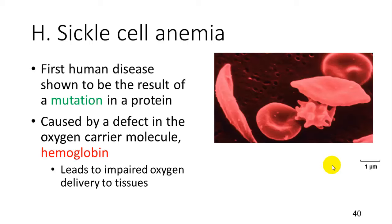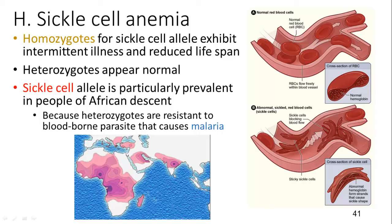Sickle cell anemia was the first human disease shown to result from a mutated protein — hemoglobin — leading to impaired oxygen delivery to tissues. If you are homozygous for sickle cell anemia, you will have a very impaired ability to move oxygen throughout your body. However, heterozygotes are resistant to malaria because of the shape of the cell, but they have enough normal red blood cells to function fairly normally.